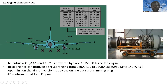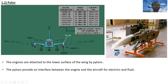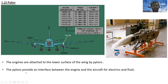Now let's look at the pylon. You can see the pylon here, along with the engine mounts — the forward mount and the aft mount — and the wing interface. The engines are attached to the lower surface of the wing by the pylon. The pylons provide an interface between the engine and the aircraft for electrics and fluid systems.